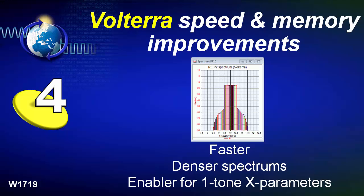The fourth improvement is a Volterra modeling step that adds speed and memory improvements to Spectrasys for nonlinear components, especially those in a multi-tone, multi-carrier situation such as a noise power ratio measurement. The Volterra surface creates a behavioral model that is faster, allows denser spectrums, and allows more accurate treatment of these multi-carrier situations for single-tone X-parameters.